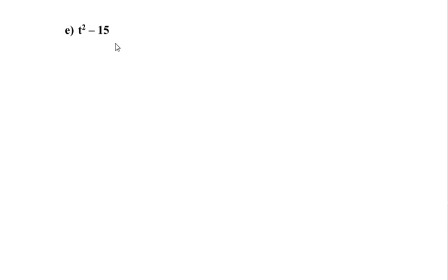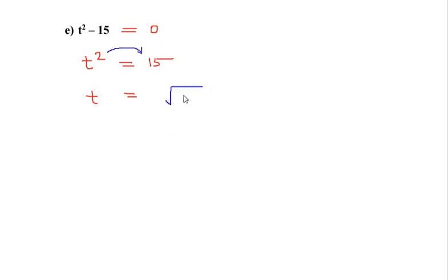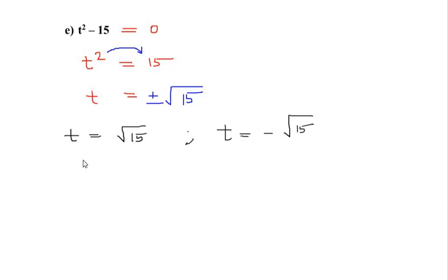Here again we need to find the zeros of the given polynomial, which is t² - 15. To get the zeros we equate this polynomial equal to zero: t² = 15 (negative 15 moves to the other side and becomes positive 15). Moving the square to the other side gives the square root of 15, and you always get plus and minus — so t = +√15 or t = -√15.